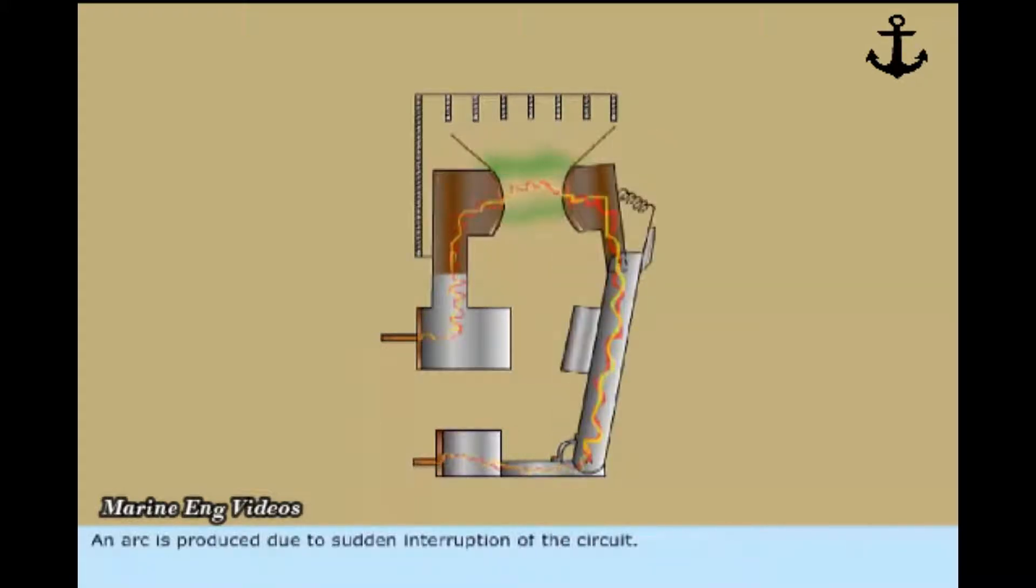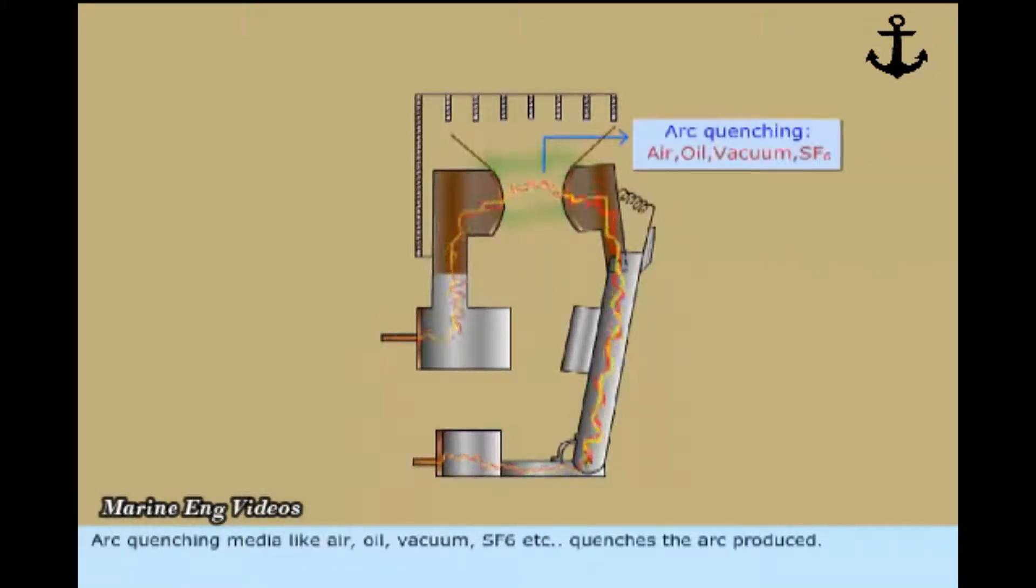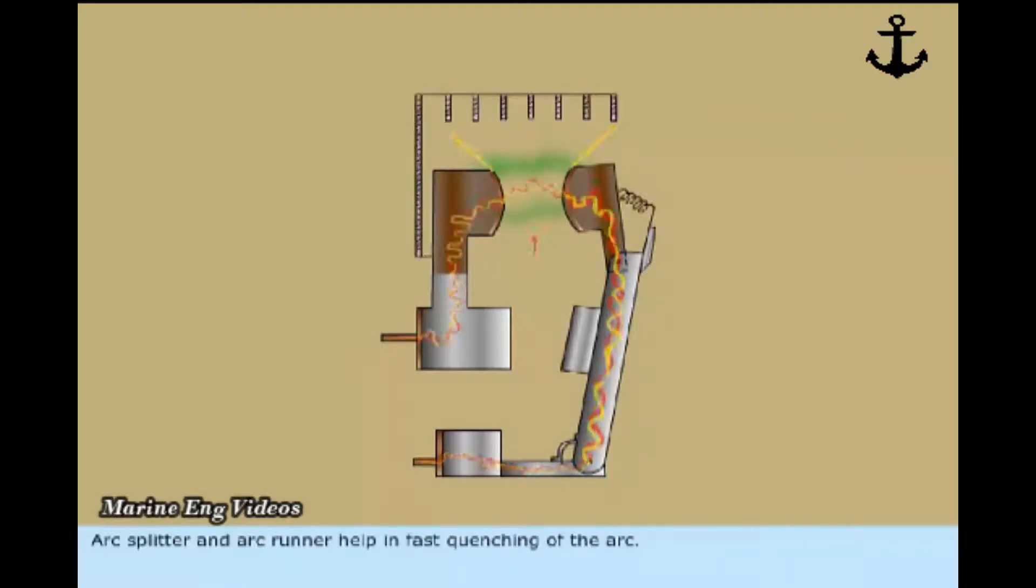An arc is produced due to sudden interruption of the circuit. It has to get extinguished as soon as possible. Arc quenching media like air, oil, vacuum, SF6 etc. quenches the arc produced. Arc splitter and arc runner help in fast quenching of the arc.